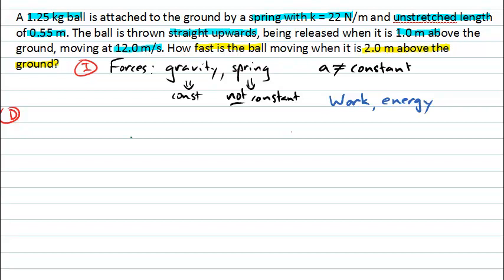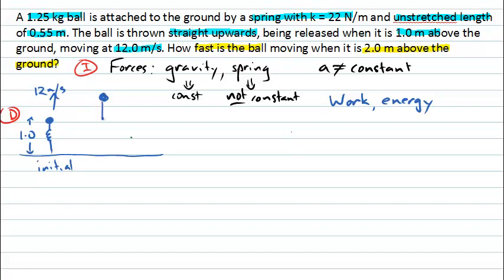Moving on to the development phase, it's useful to draw a diagram of the situation. If this is the ground, we have a ball attached by a spring to the ground. It starts one metre above the ground moving upwards at 12 metres per second — that's our initial state. Some time later the ball has moved upwards, still attached by the spring but the spring has stretched, and we're now 2 metres above the ground. We'd like to know how fast the ball is moving at that point.